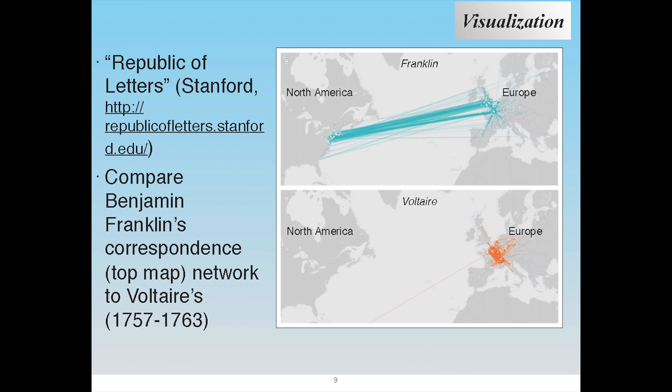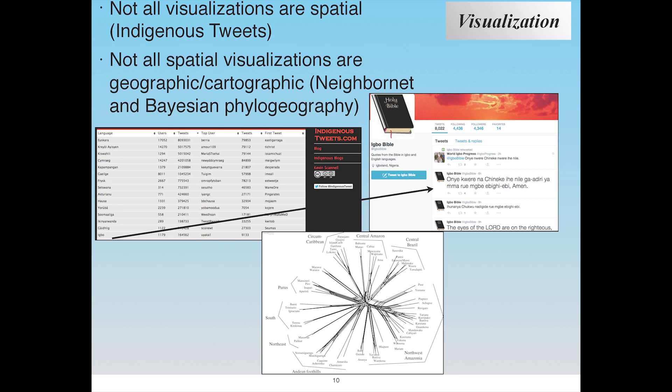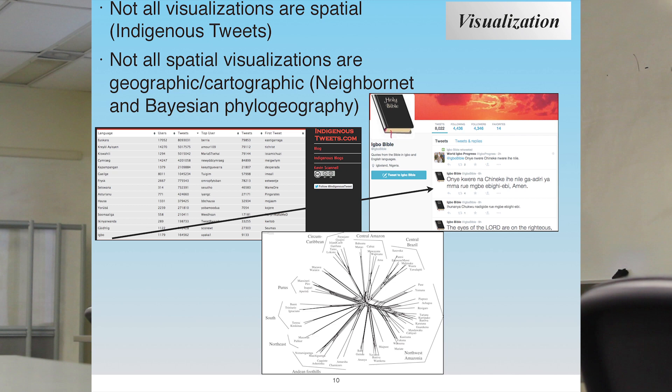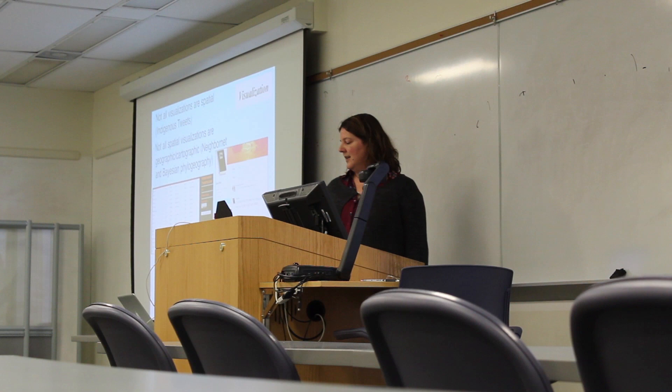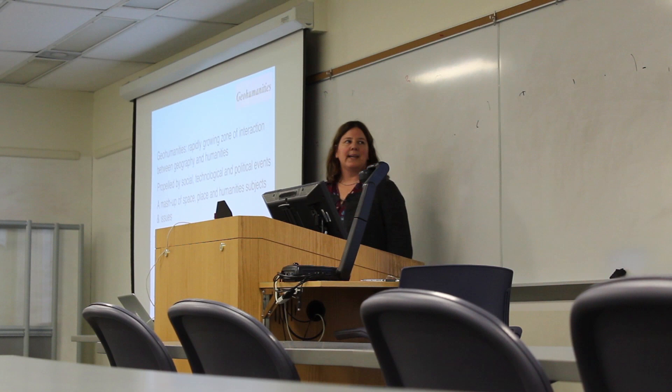Geovisualization can be useful in all walks of life. My colleague Jessica Despain likes to use an example showing Benjamin Franklin's correspondence maps between North America and Europe — comparing who he was corresponding with versus Voltaire, showing a lot of cross-Atlantic correspondence with Franklin and within-Europe correspondence with Voltaire. Not all visualizations are spatial, and not all spatial visualizations are geographic — for example, you can have phylogenetic comparisons that look at family relationships between different classes or categories.